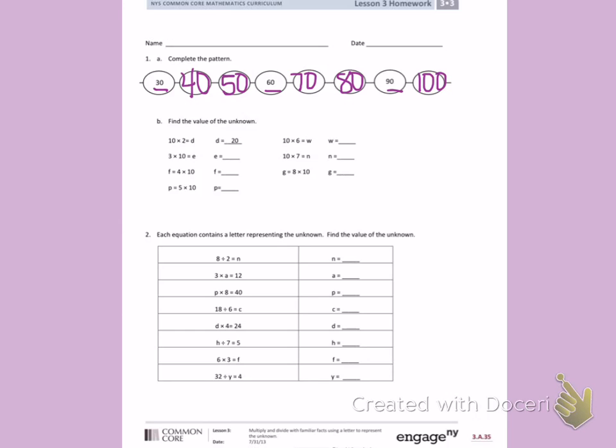Part B. Find the value of the unknown. The first problem is done for you. 10 times 2 equals D, where D equals 20.